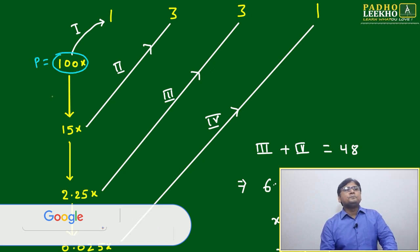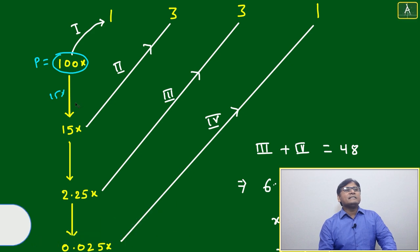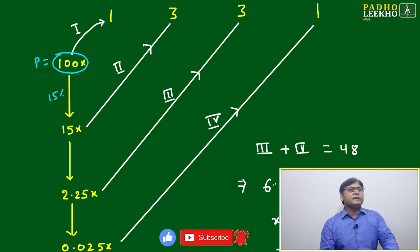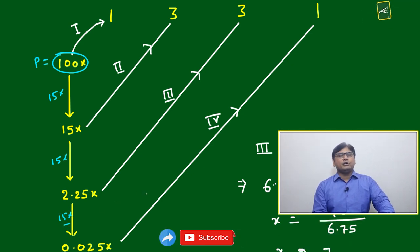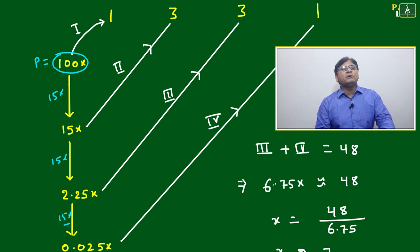Take 15% interest. First time 15%, it will be 15x. Again 15% gives 2.25x. Again 15% gives 0.025x. Only three times because n equals 3. So we have 100x, 15x, 2.25x, and 0.025x. The last one will be almost negligible.